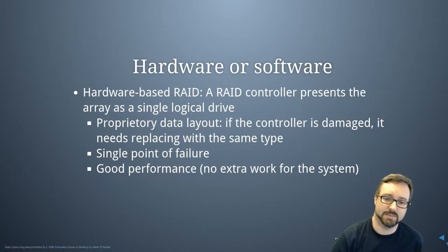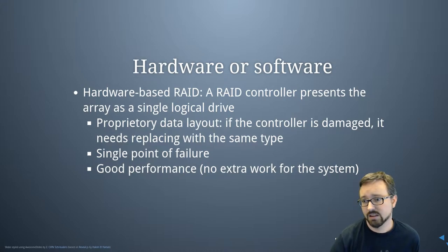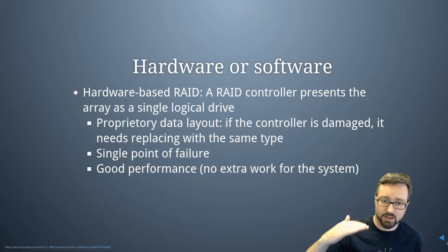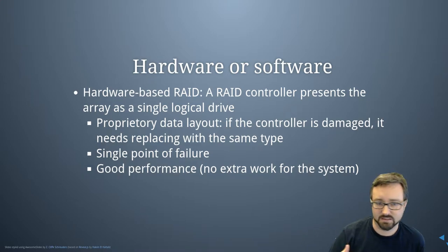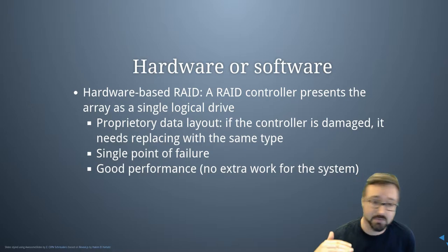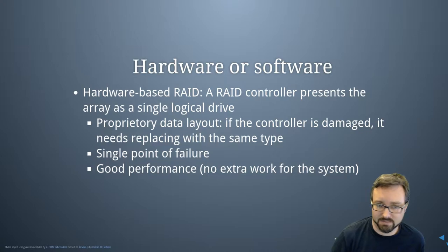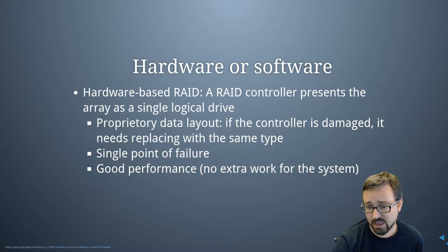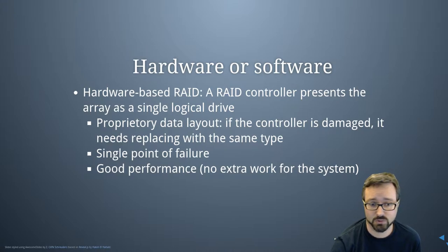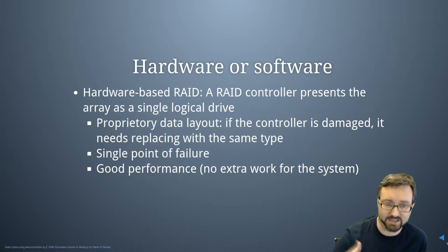One of the first decisions you need to make with RAID is whether to use hardware or software-based RAID. With hardware-based RAID, you have a physical RAID controller that the hard drives plug into, which presents as an interface to the computer. There's typically a proprietary data layout, which means if the controller is damaged you can't access the files without a replacement controller with the same chipset — introducing a single point of failure, though the controller probably fails less often than a hard drive. The primary advantage is good performance, since the hardware controller handles the extra processing rather than the CPU.